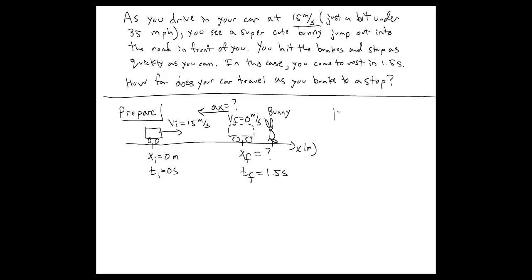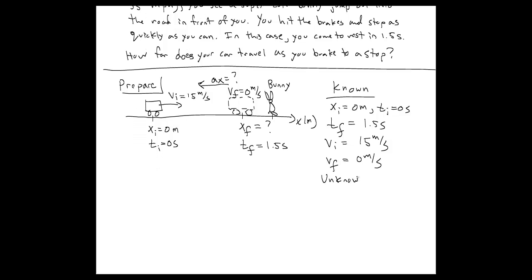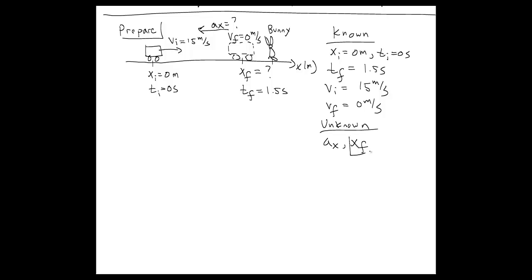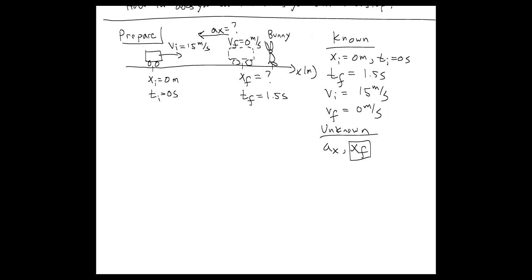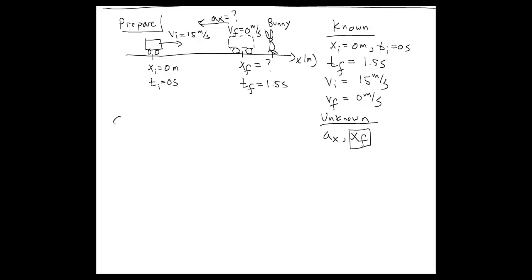Before we try and solve anything, let's list our knowns and unknowns. We know the initial x position and initial time, the final time, and the initial and final velocities — 15 meters per second and zero meters per second respectively. The things we don't know are the x acceleration and the final x position. The problem asks us to find the final x position, but we're actually going to need to find the acceleration as an intermediate step, making this a two-step problem. Now we've set everything up with our picture and our knowns and unknowns, so let's move on to solving.